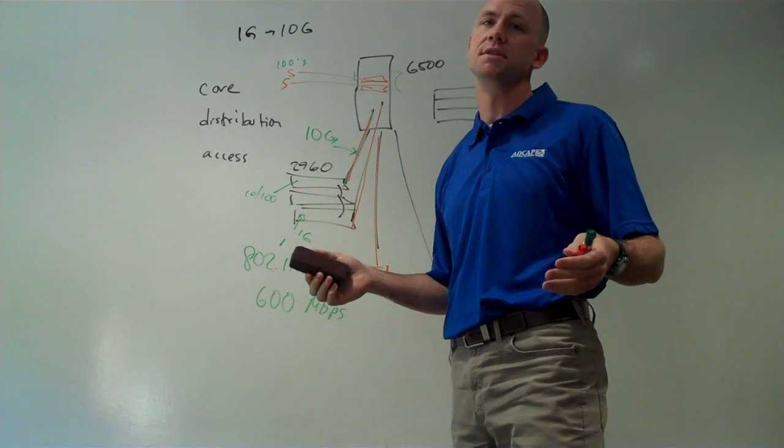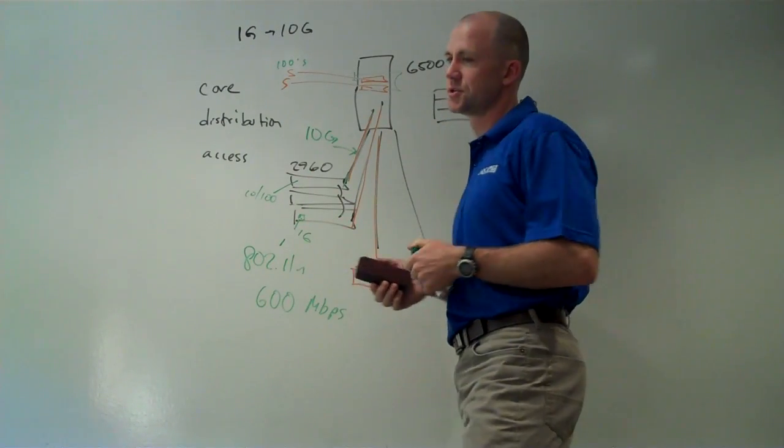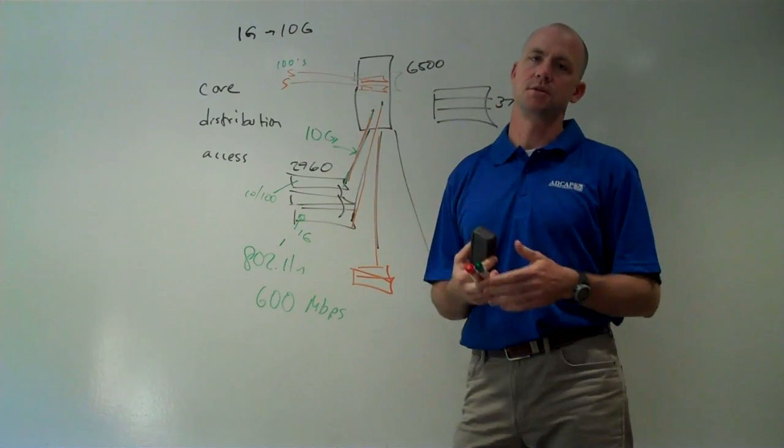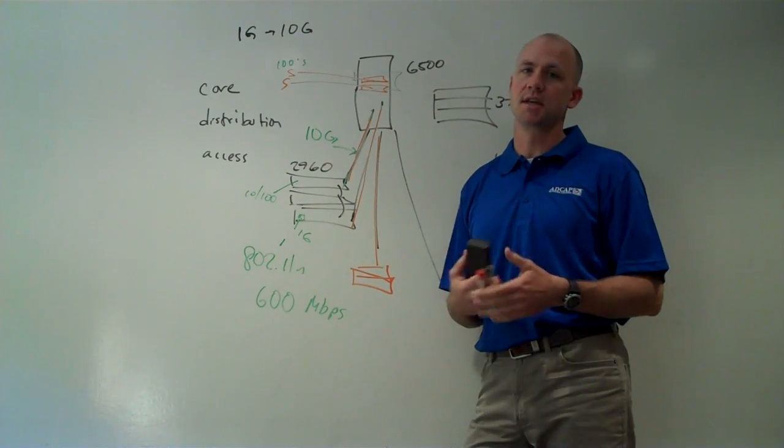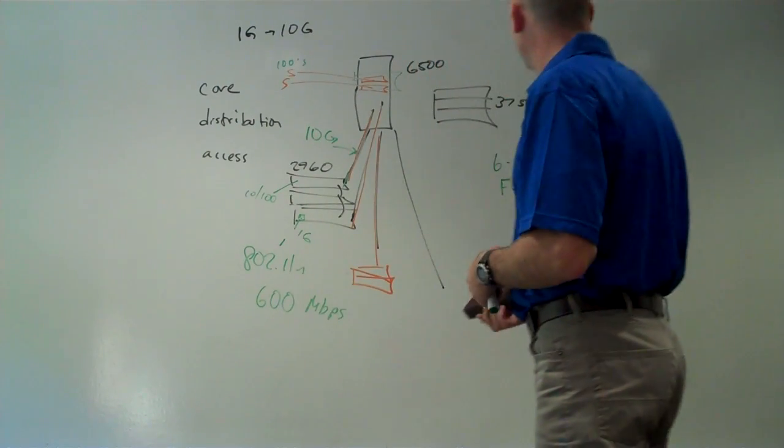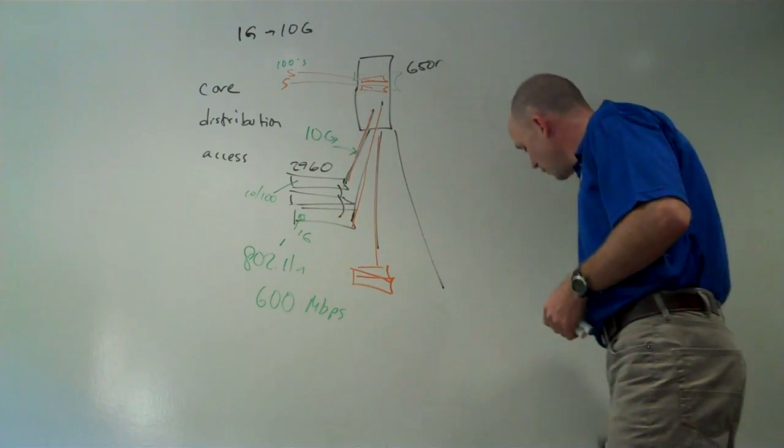So direct attached storage just means drives inside the servers. And shared storage means using external storage rates like an EMC or a NetApp or an Equalogic or something like that, a big box of disks that's connected at high speed back to all the servers. So that has made...